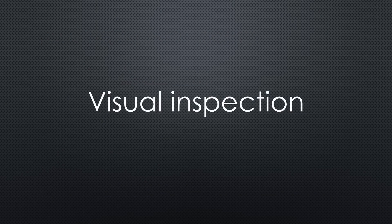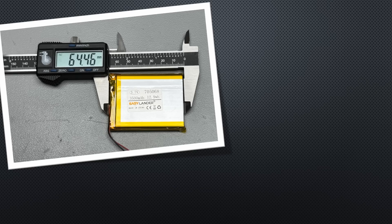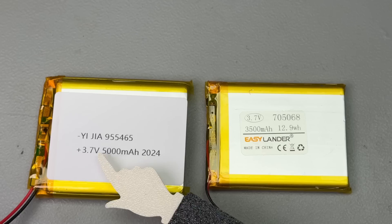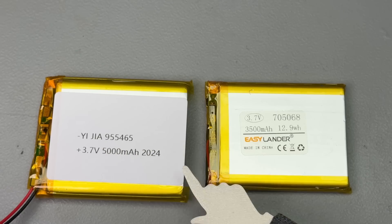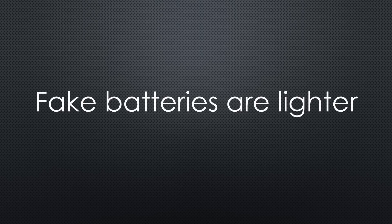Let's start with the basics: visual inspection. For new batteries, always check size and weight. Lighter or smaller batteries usually have less capacity.